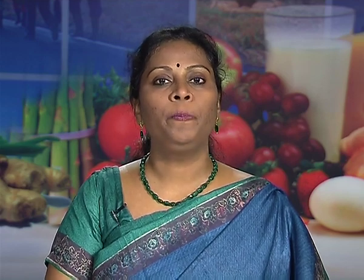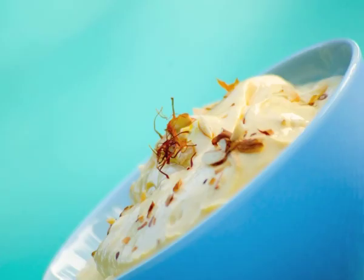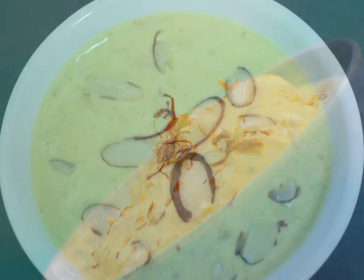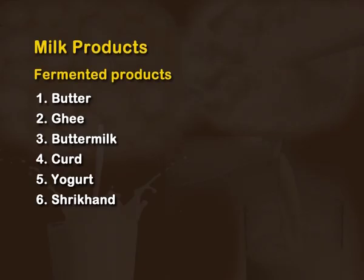Fermented milk products are useful for treatment of a wide variety of disorders of the stomach such as colitis, constipation, diarrhea, gastroenteritis, diabetes and hypercholesterolemia. Shrikhand, popular in Maharashtra and Gujarat, is a concentrated form of curd from which the moisture is removed, to which sugar powder and flavoring agents are added, and it is eaten as a dessert.